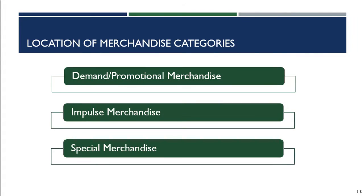We've now covered the three overarching design elements of a store and discussed how to locate special merchandise categories. In part four of this module, we're going to talk about how to create an atmosphere in your retail establishment. So stay tuned.